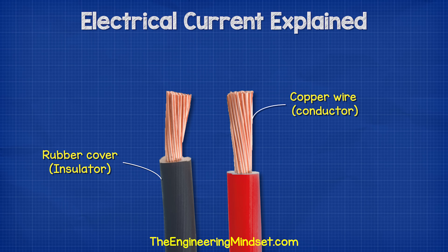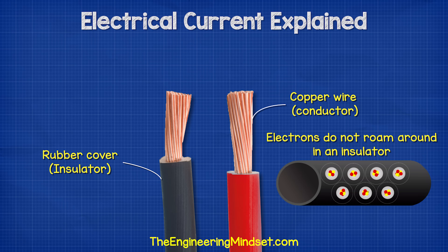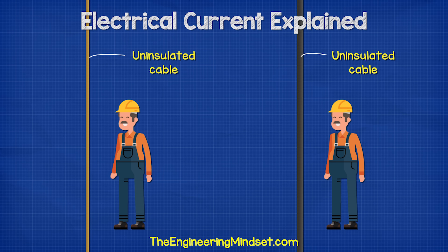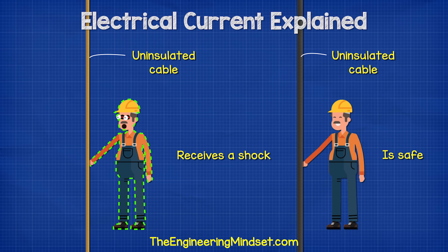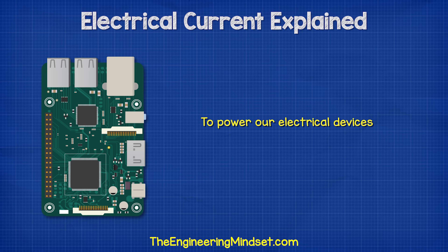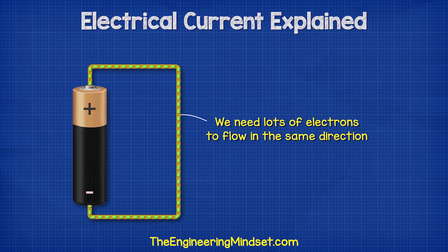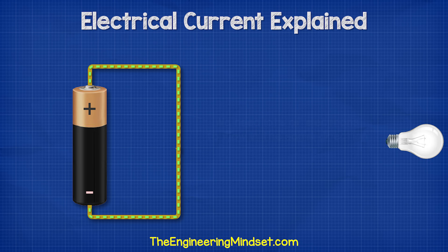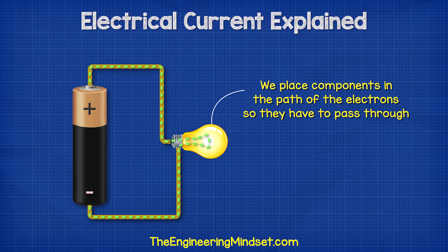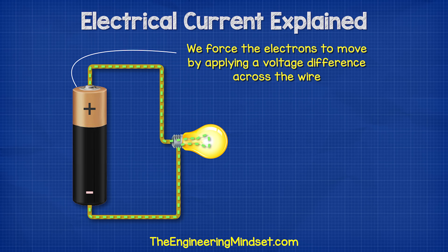We wrap copper wires in rubber because the rubber is an insulator, which means it does not allow free electrons to pass through it. That provides a barrier and keeps the electricity within the wires and away from us. For us to use electricity to power our devices, we need lots of electrons to flow in the same direction along a circuit. We can then place things like lamps in the way of these electrons so that they have to flow through it and generate light and heat in the process. To do this, we need to force electrons to move, and we can do that by applying a voltage.